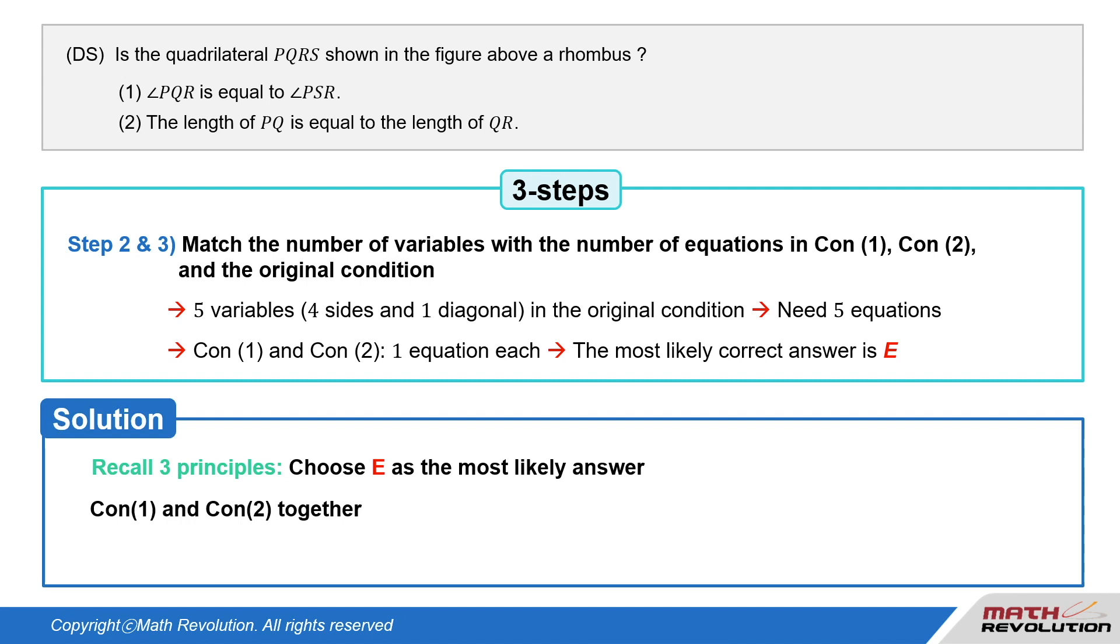Let's take a look at conditions 1 and 2 together. Conditions 1 and 2 tell us that angle PQR is equal to angle PSR and the length of PQ is equal to the length of QR.